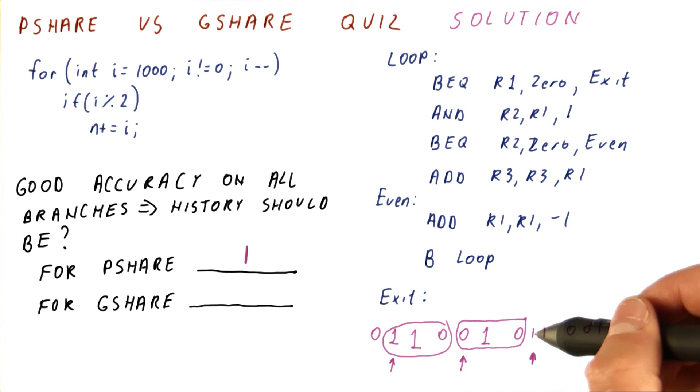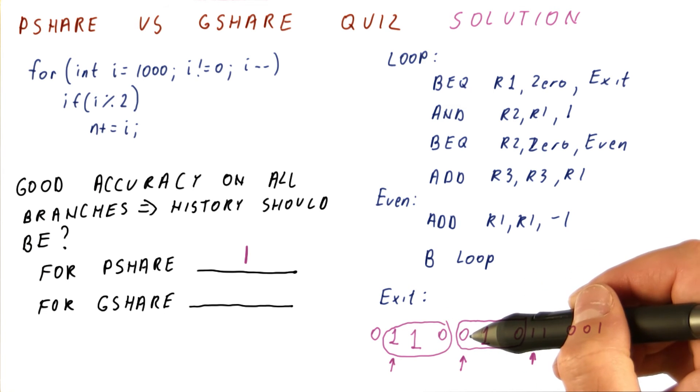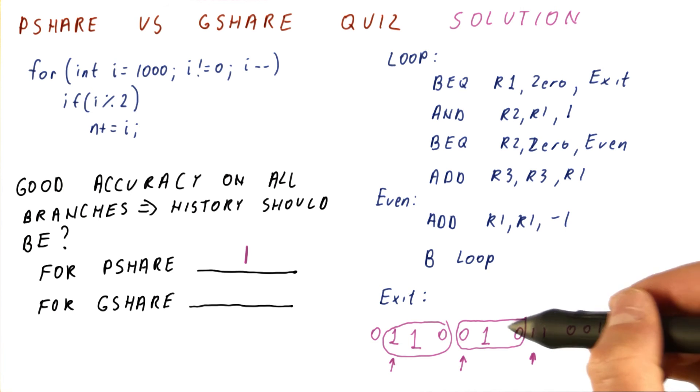Note that really, there are only two possible histories for this branch. One is the one, one, zero, and the other is zero, one, zero. Because the other two branches are just having the same outcome every time. So we need a three-bit history.